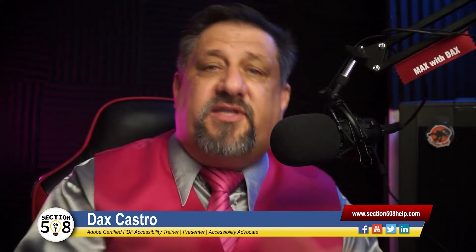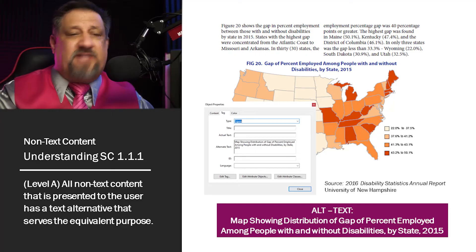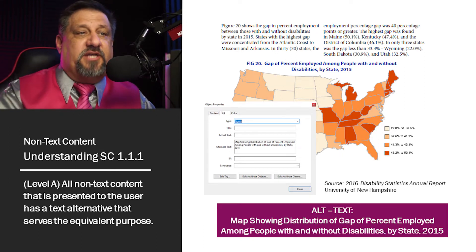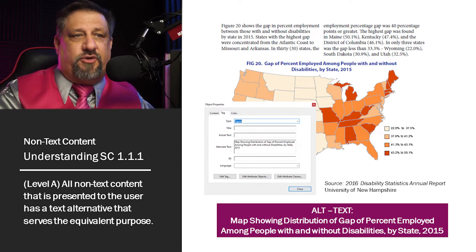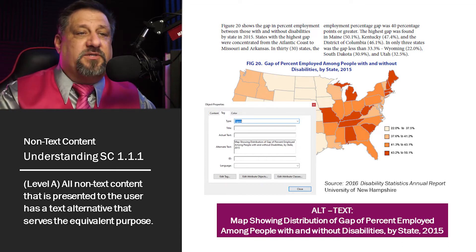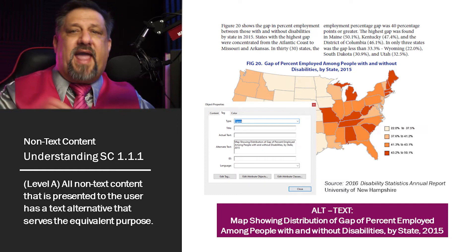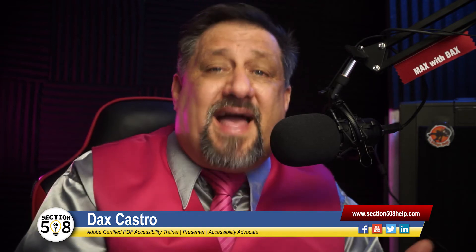Let's take a look at another example. This happens to be from the 2016 Disability Statistics Annual Report from the University of New Hampshire. You can see very clearly that figure 20 shows the gap in percentage of employment between those with and without disabilities. This is supported by body text, and you can see it mentions 50.1% for Maine and 47.4% for Kentucky, with the body text going through and dictating out many of these different data points. So when you have alt text that reads 'map showing distribution of gap of percent employed among people with and without disabilities by state, 2015,' that's enough — because you've supported it with the body text.